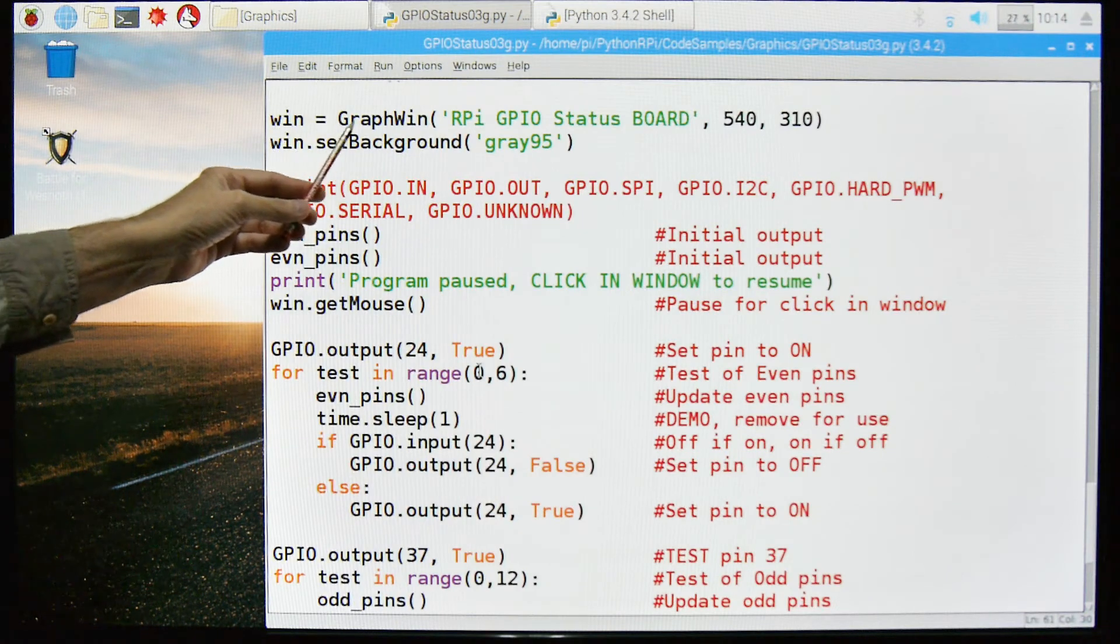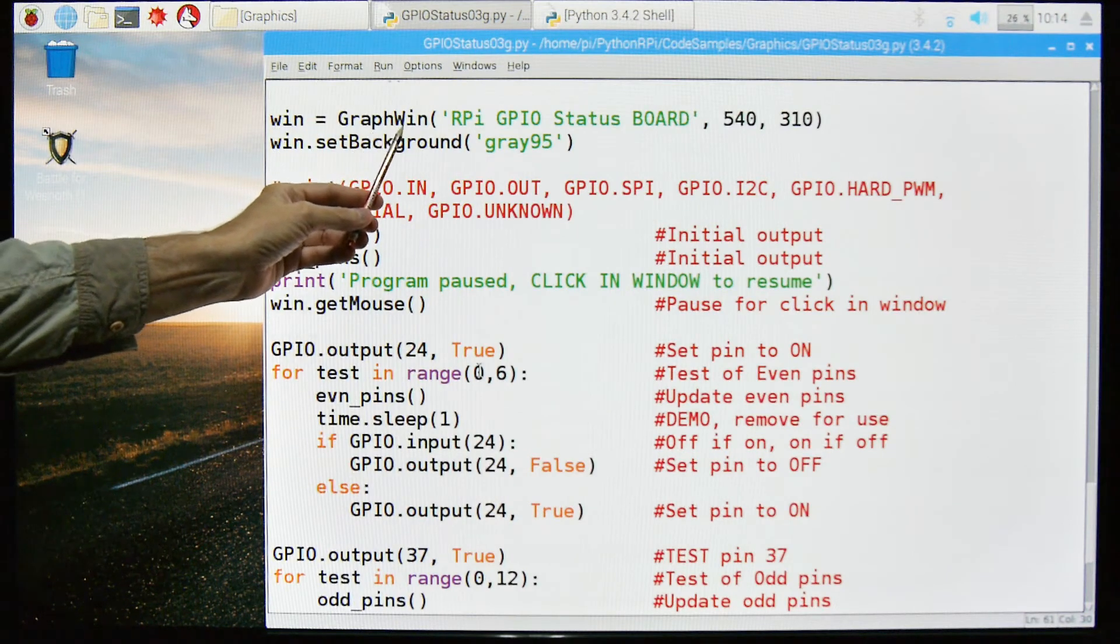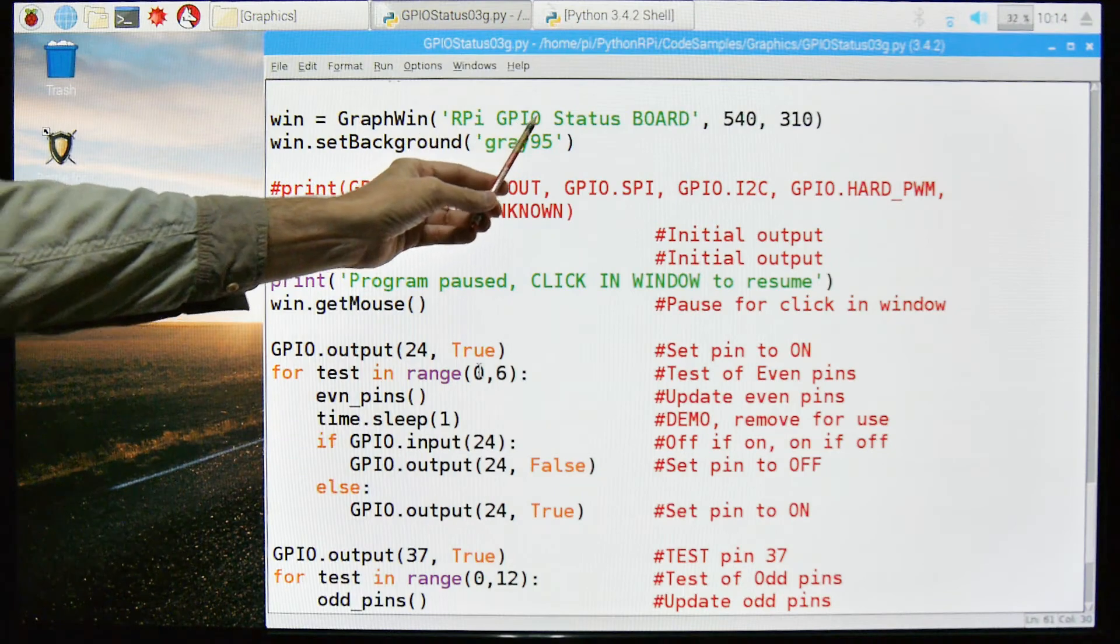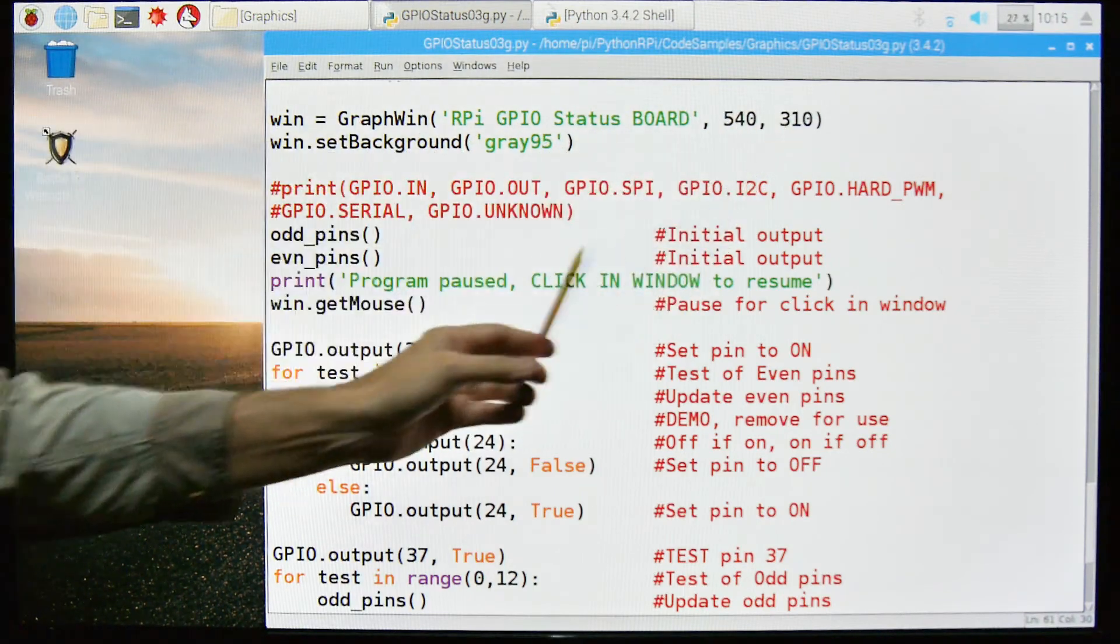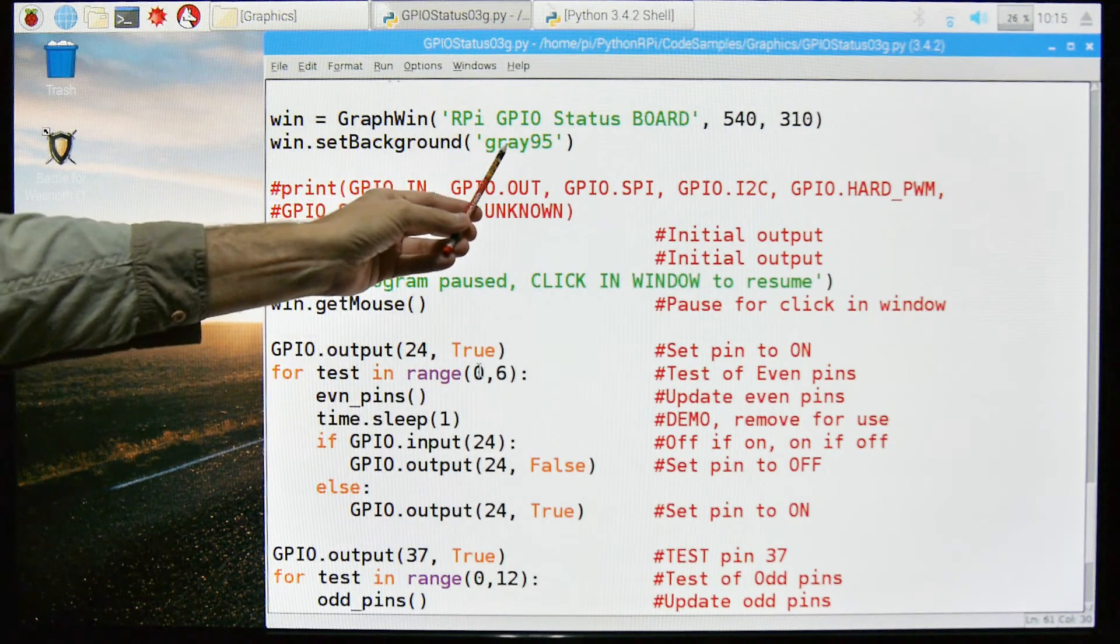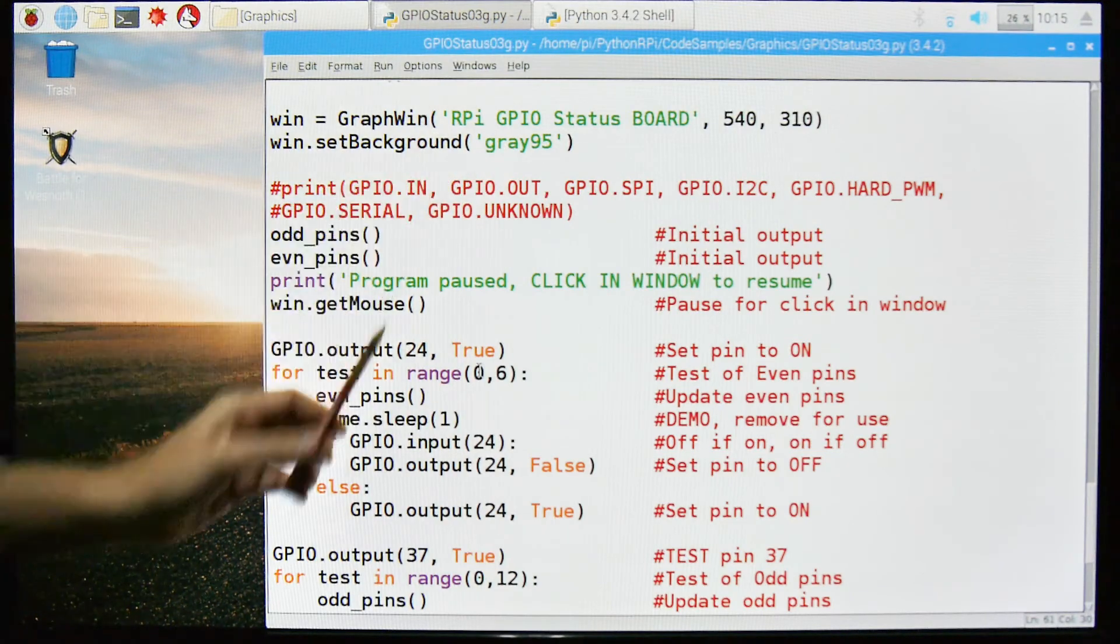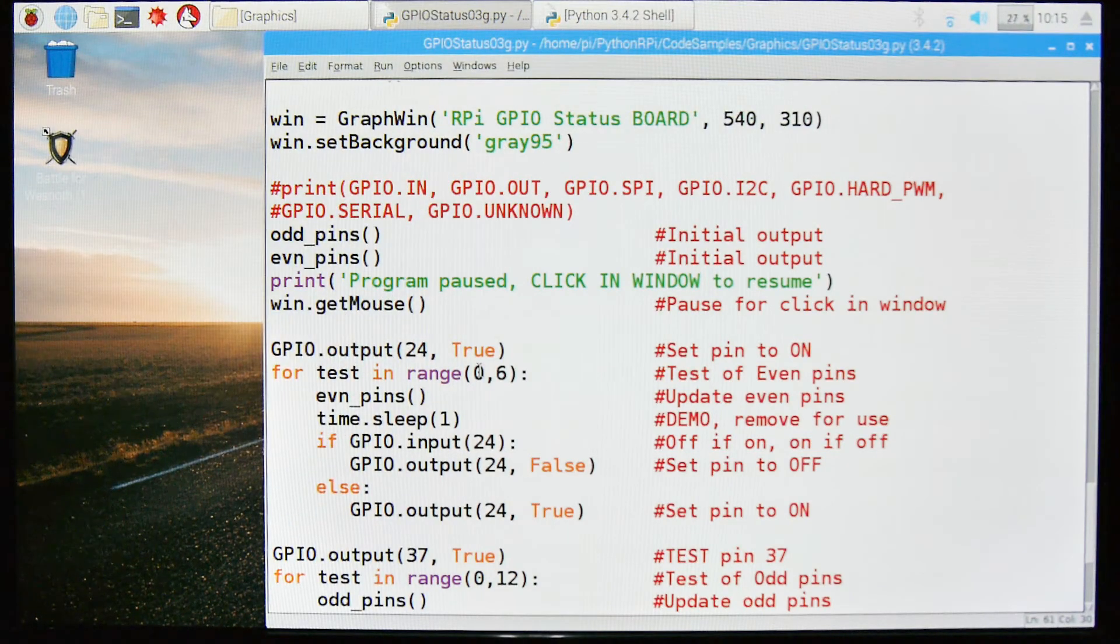So this is our window, we're creating our window, we're going to call it RPI GPIO status board. It's going to be this many pixels, X and Y. We're going to set the background to gray 95, that's important that it's the same color as our erasure rectangle.